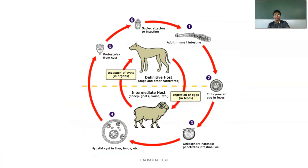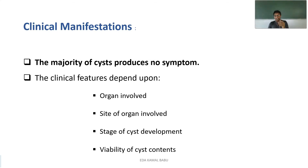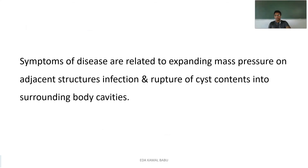Regarding clinical manifestations, the majority of cysts do not produce any signs and symptoms. The clinical features depend upon the organ and site where they are involved. If it is in the brain you can observe neurological symptoms; if in the liver, hepatic symptoms; if in the lungs, respiratory symptoms. The stage of cyst development and viability of cyst contents are also determining factors.